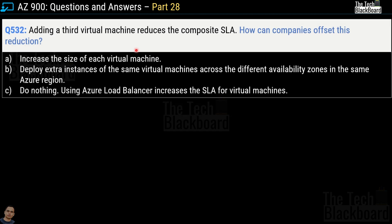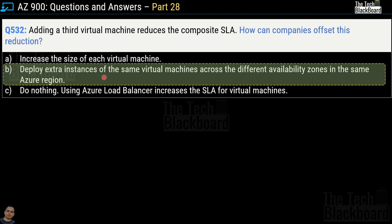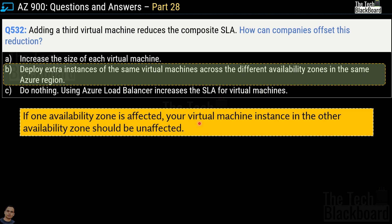Question number 532: adding a third virtual machine reduces composite SLA. How can companies offset this reduction? Options are: increase the size of each VM; deploy extra instances across different availability zones in the same Azure region; do nothing; or use Azure Load Balancer. The correct answer is option B — deploy extra instances across different availability zones. Even if one availability zone is affected, the VM instance in another zone remains unaffected and the application keeps running.